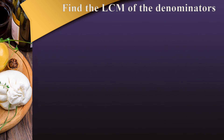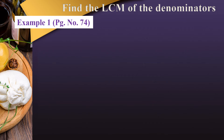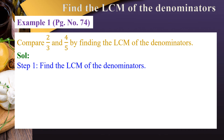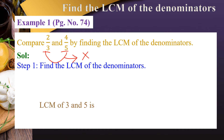The next method is Finding the LCM of the Denominators. Example number 1, page number 74: Compare 2/3 and 4/5 by finding the LCM of the denominators. Solution: The first step is to find the LCM of the denominators 3 and 5. Since 3 and 5 are both prime numbers, we multiply them, so the LCM of 3 and 5 is 15.